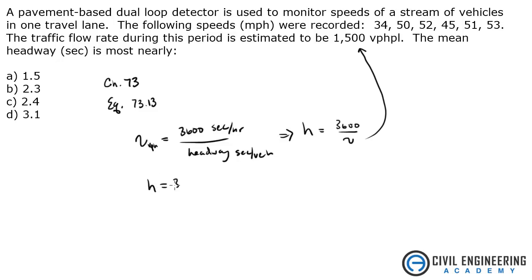Which is going to be simply 3600 seconds per hour divided by 1500 vehicles per hour per lane. So what does that give me, that gives me an answer of 2.4 seconds, which is C.